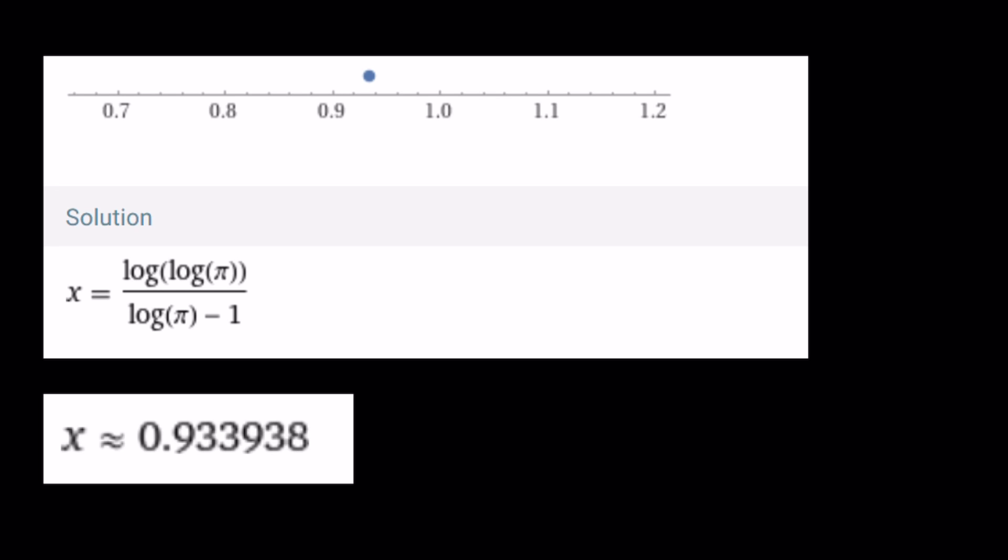So the numerical value for this equation is supposed to be 0.933938. That's pretty close to 1, right? Don't you think so? ln π minus 1 is approximately ln ln π. You can pretty much say that, right?